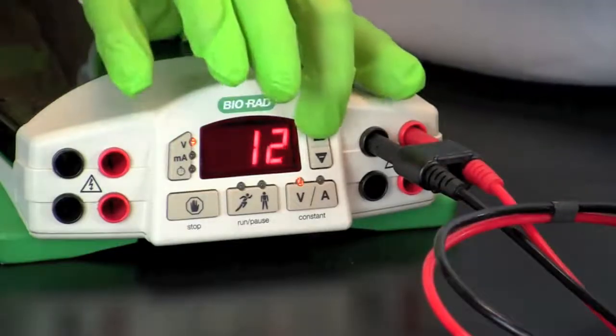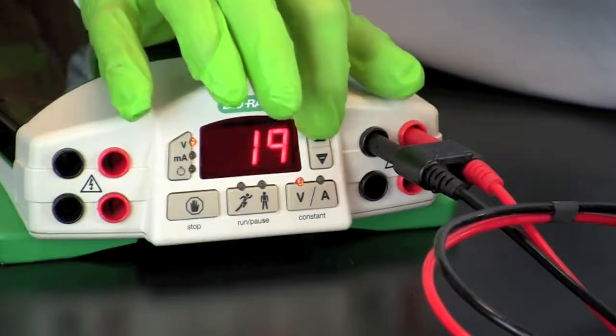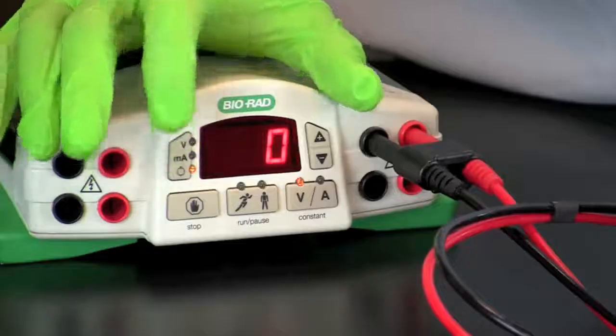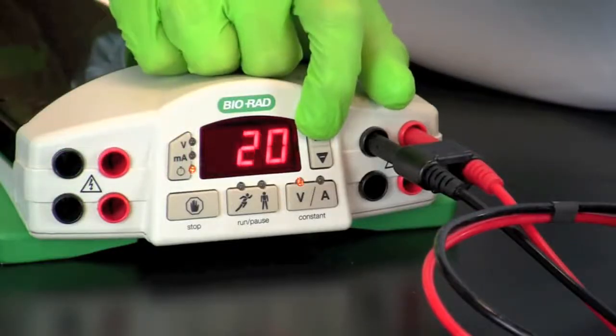Turn on the power supply and run the blot at 20 volts. If a timer is available, set it for two and a half hours.